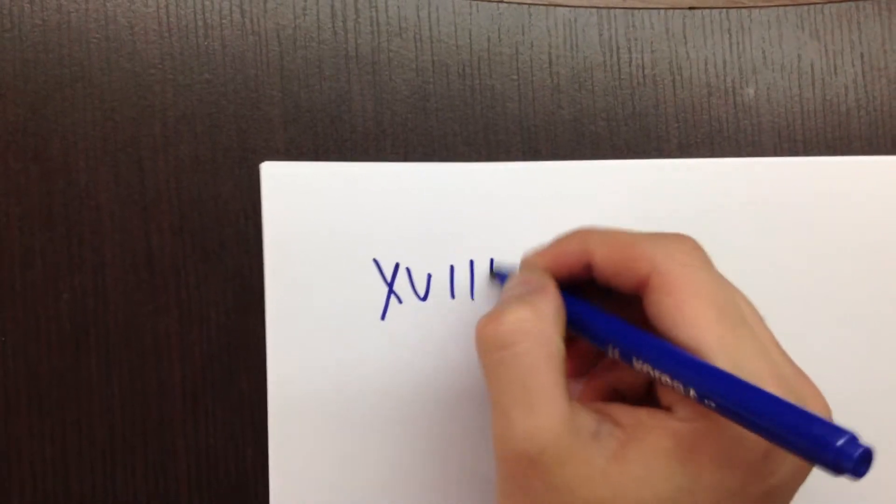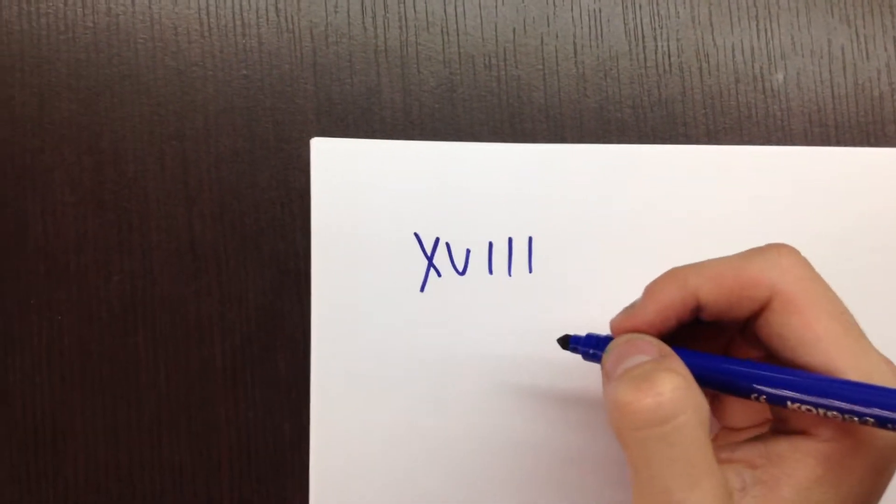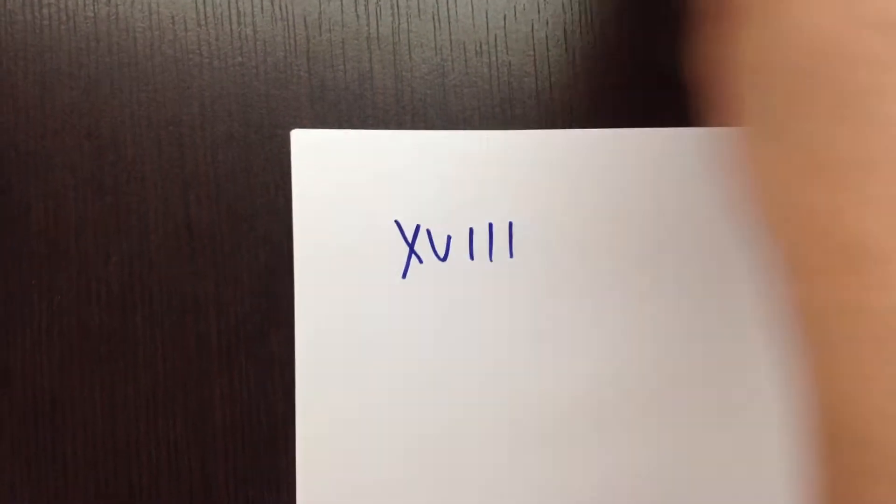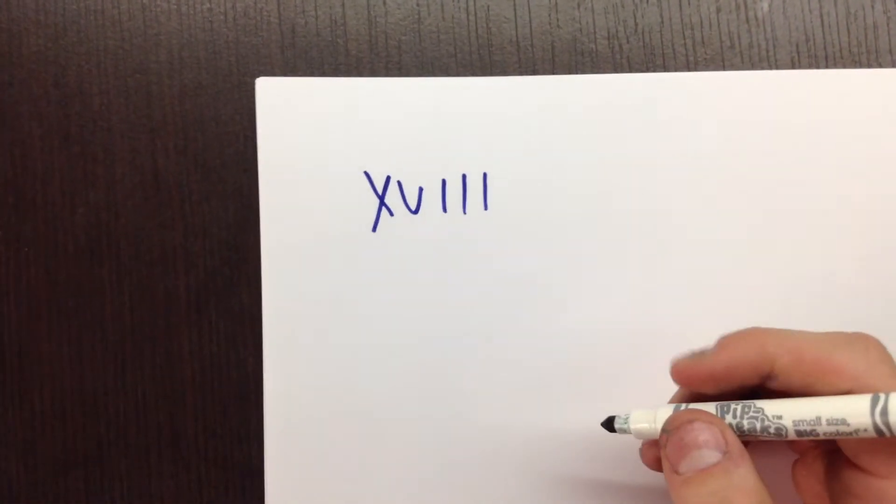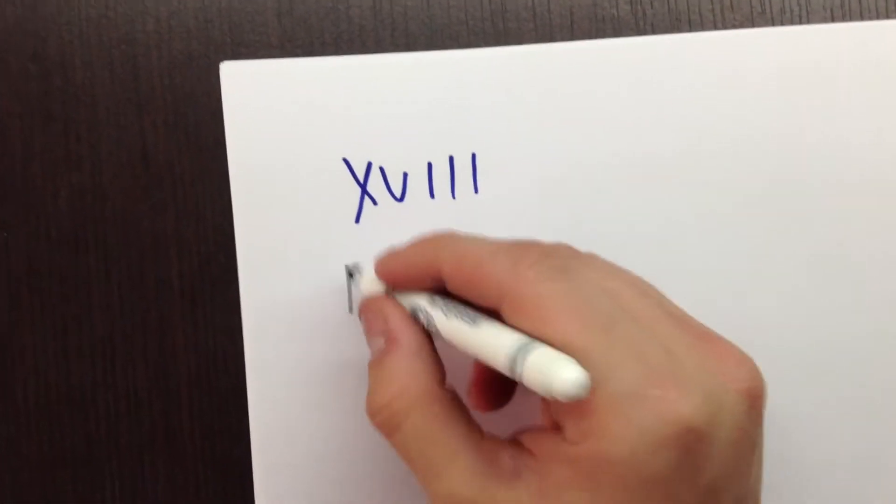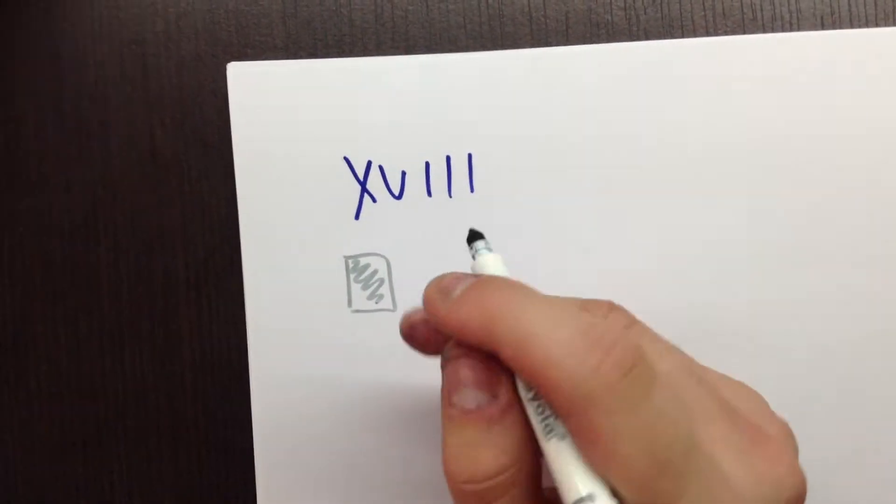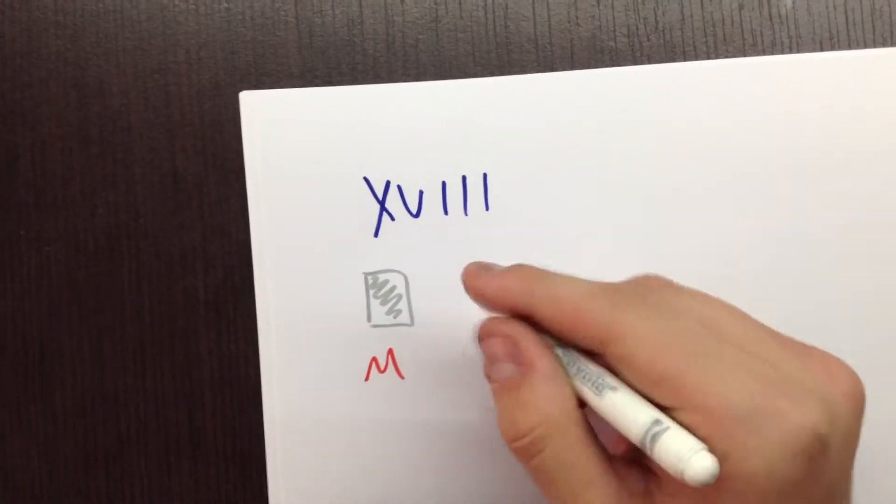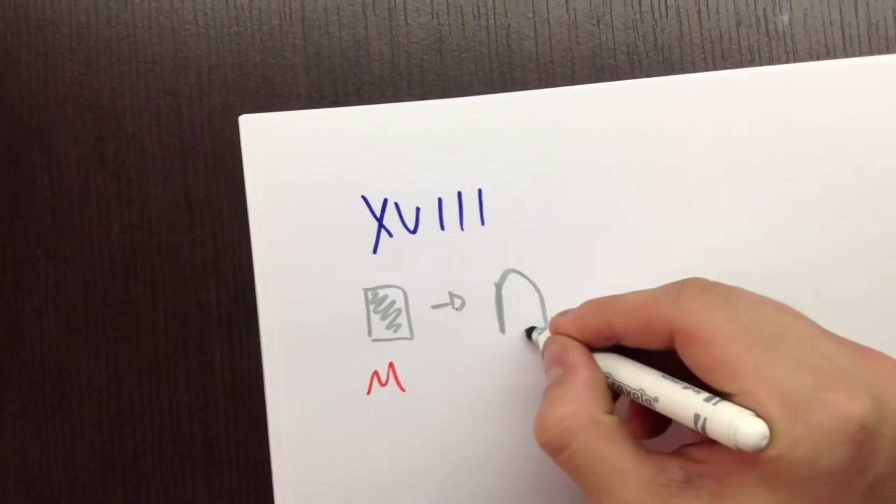By the end of the 18th century, chemists believed that the definition of an element was a substance that couldn't be broken down with ordinary chemical means. Let's use the example of iron, which was heated up to create things such as horseshoes.